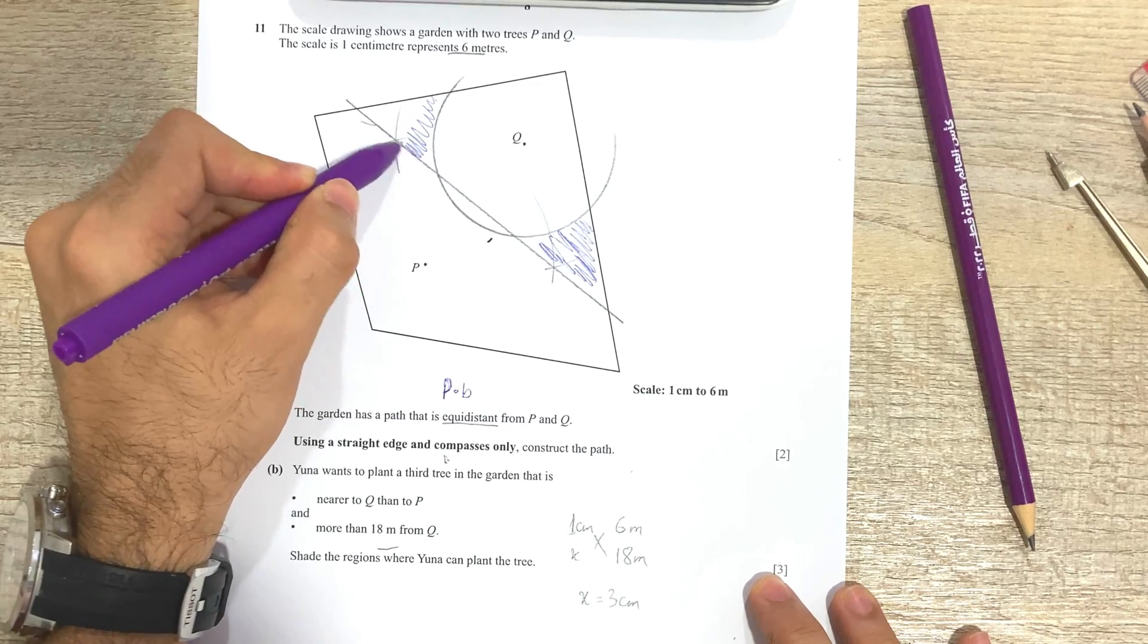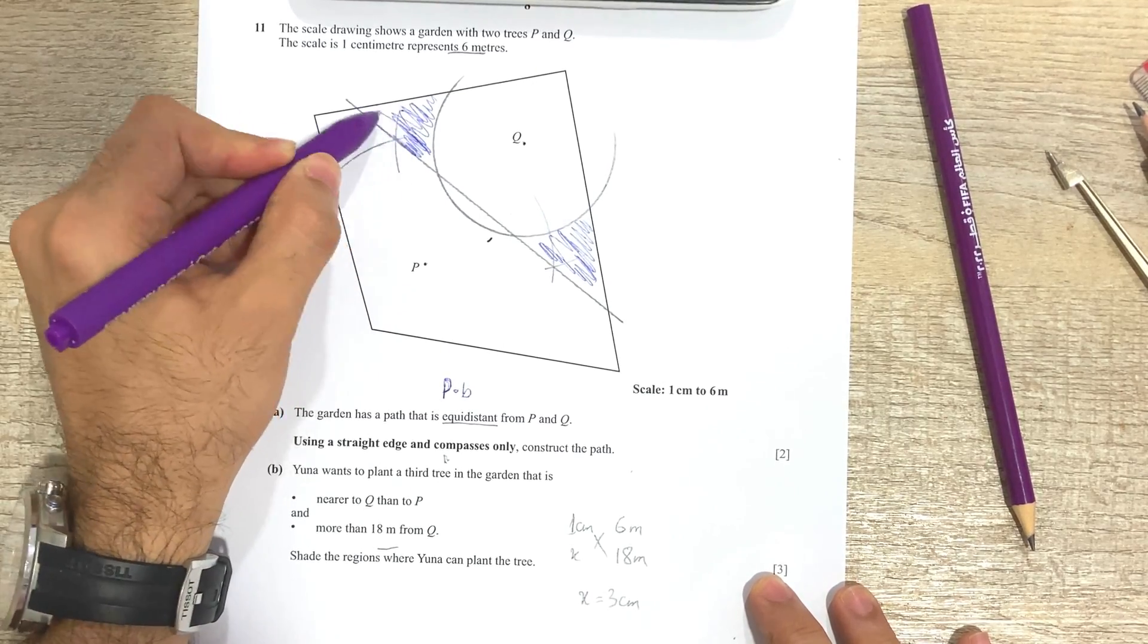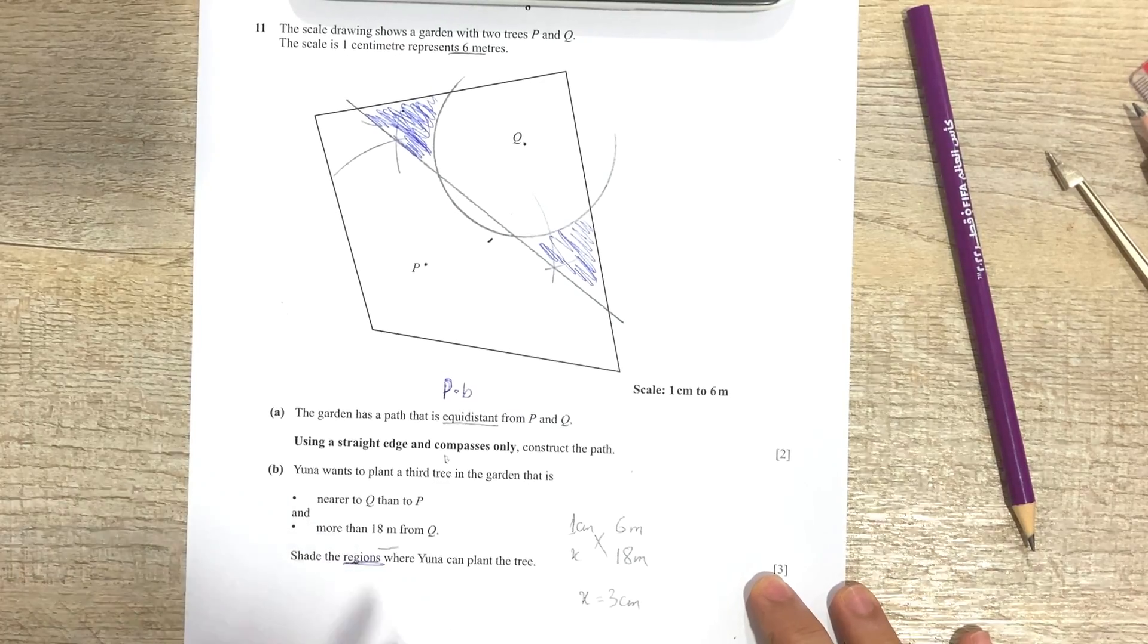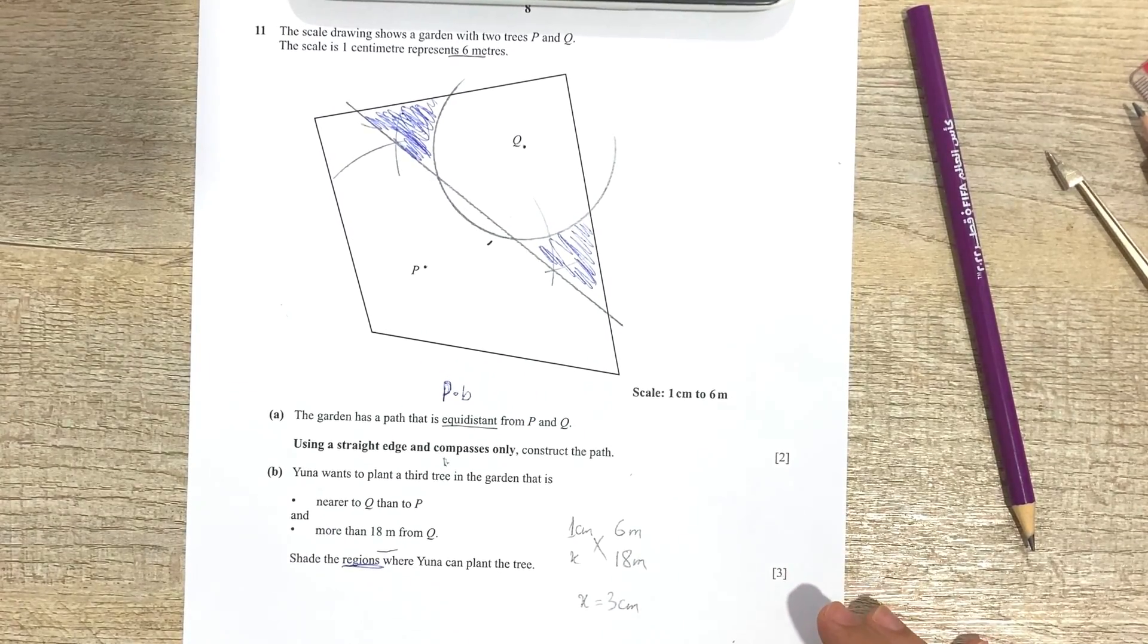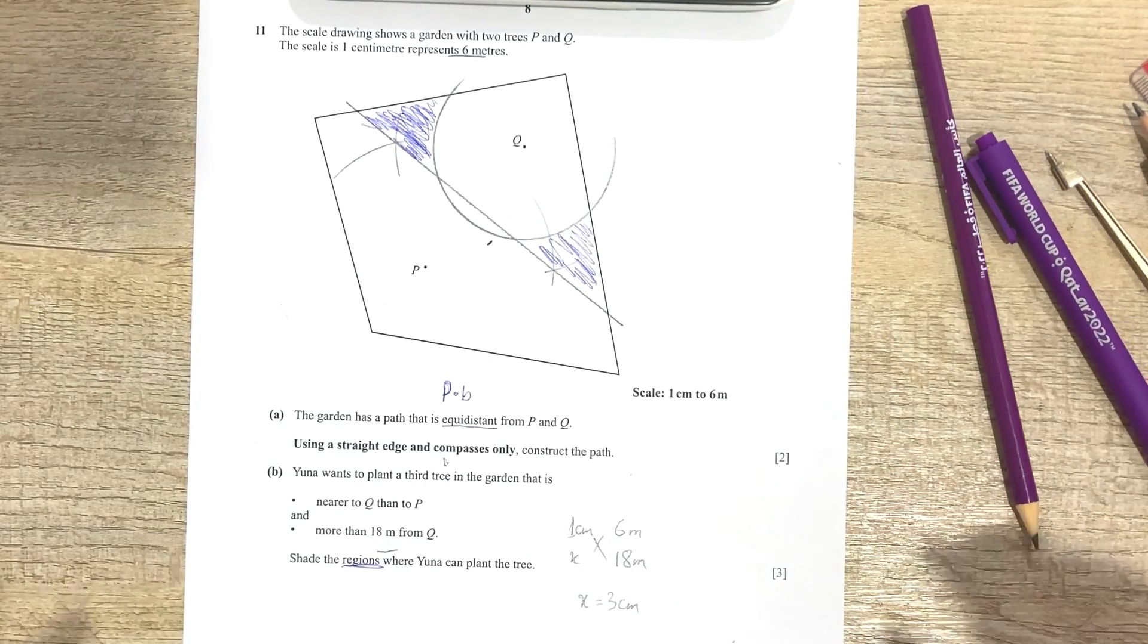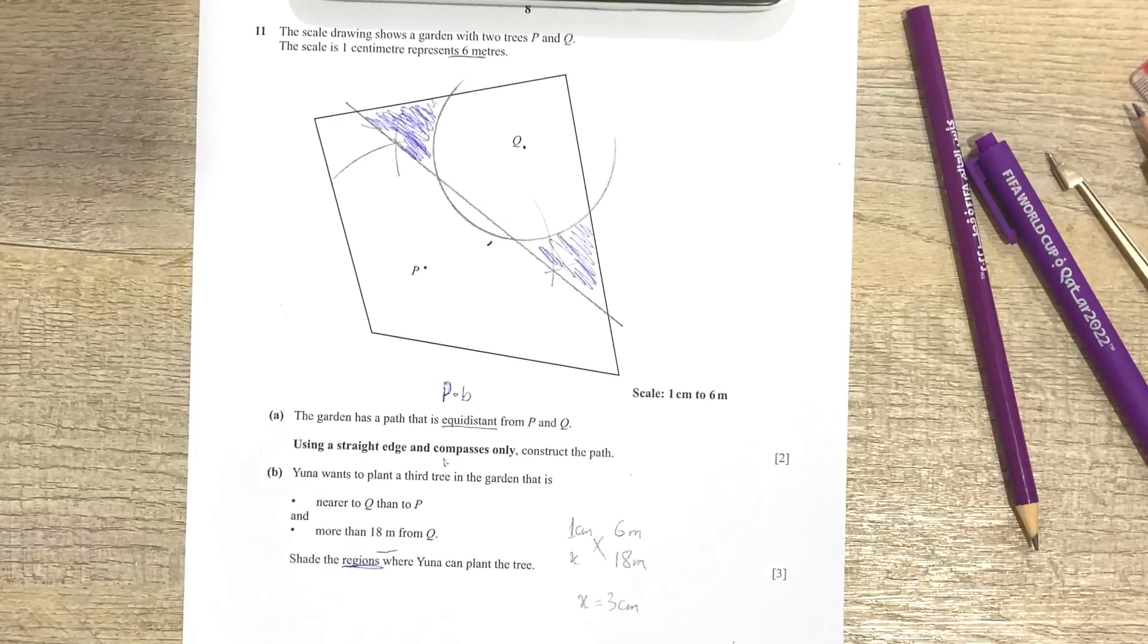So outside of the arc that we have made and above the perpendicular bisector could only be one region, and it's this region. So this is the region that we are going to shade. In fact, if you read the question carefully, notice how it uses the word 'shade the regions,' that means the question is already trying to drop us a hint and telling us that yes, there will be more than one region.